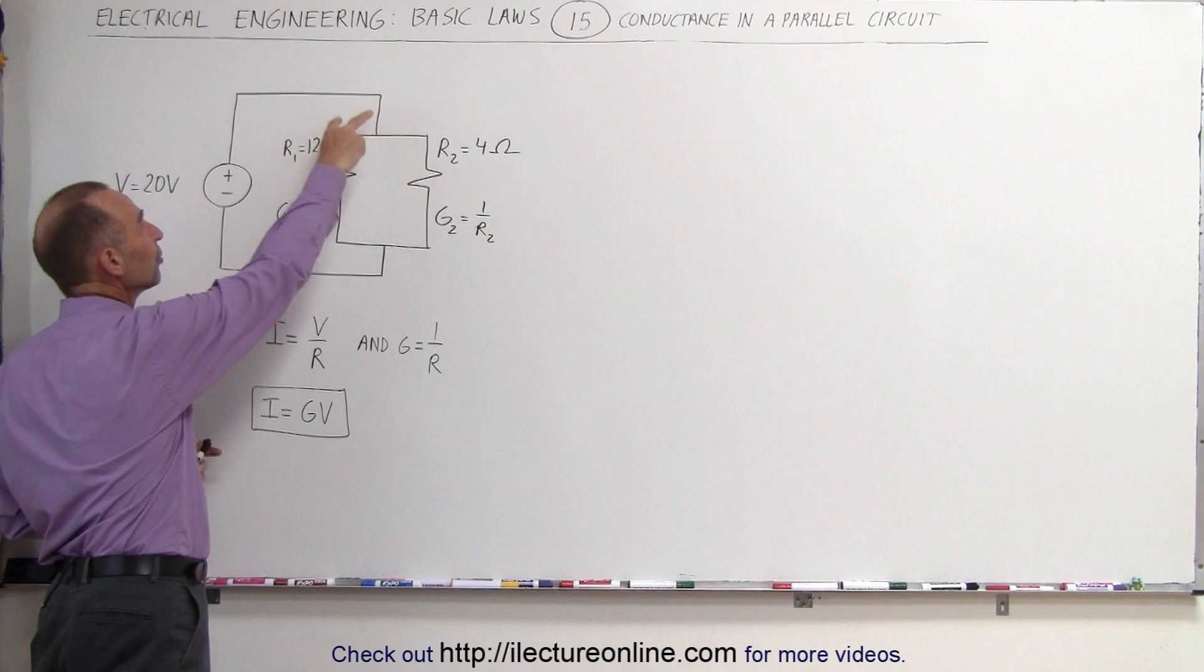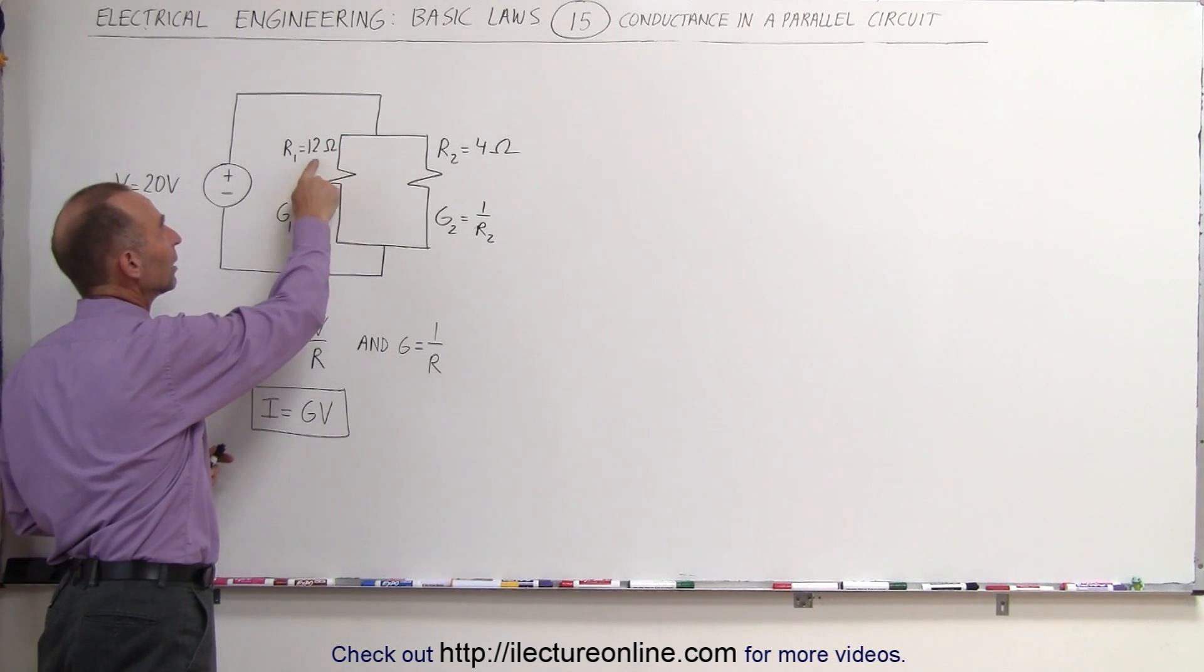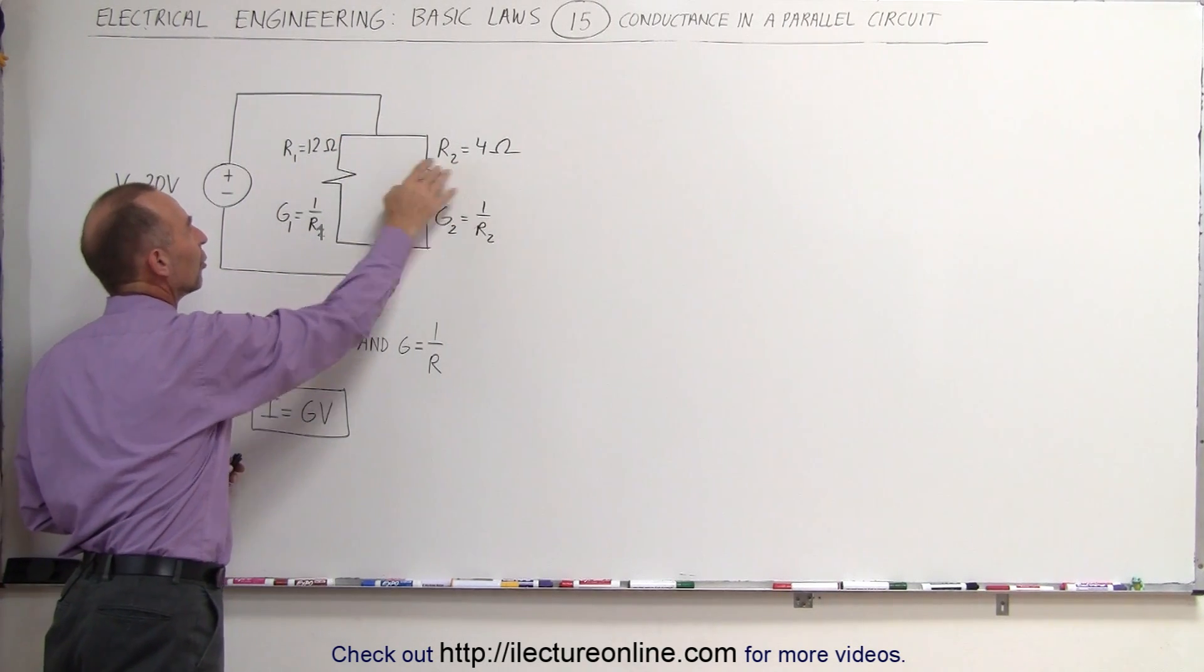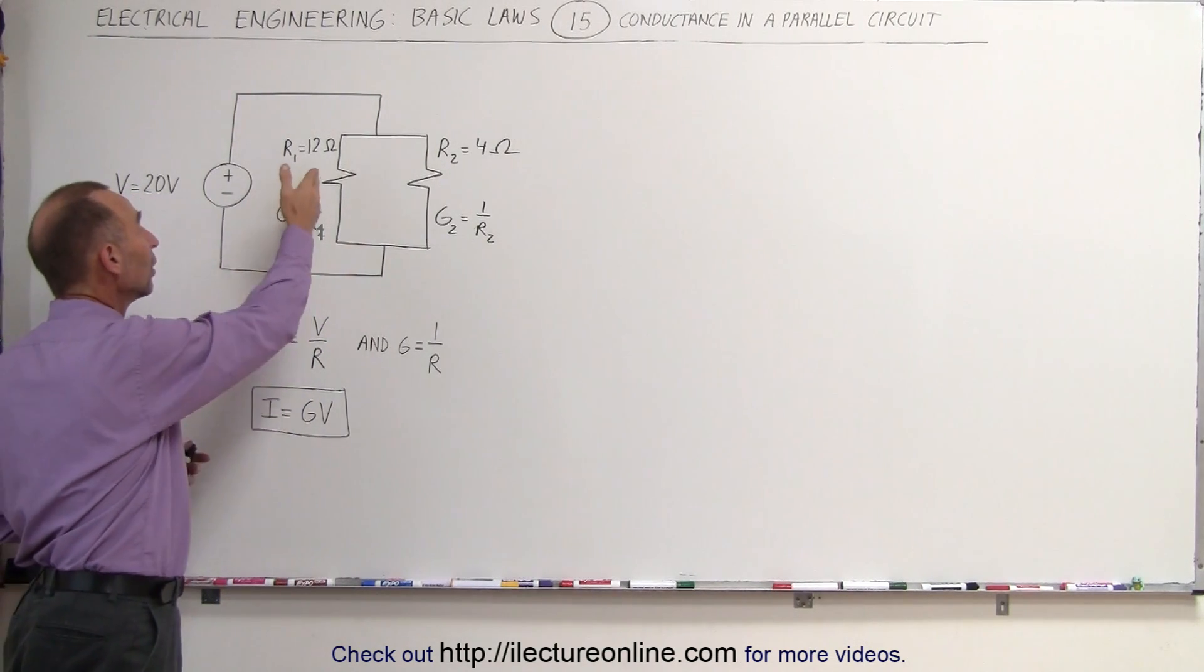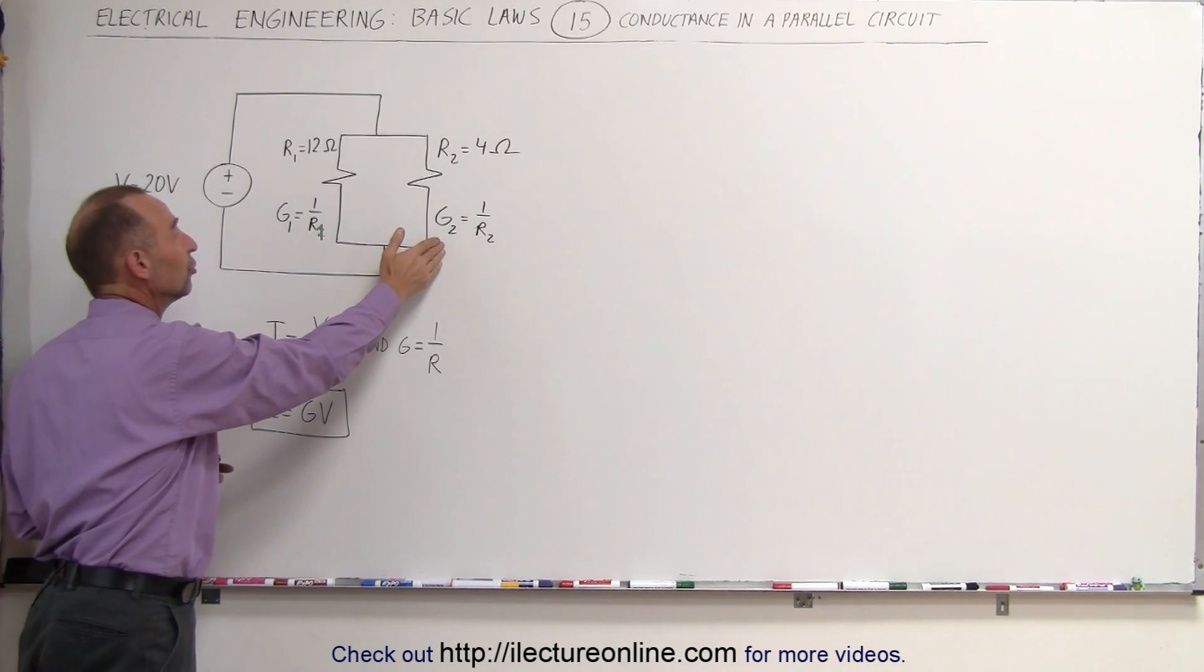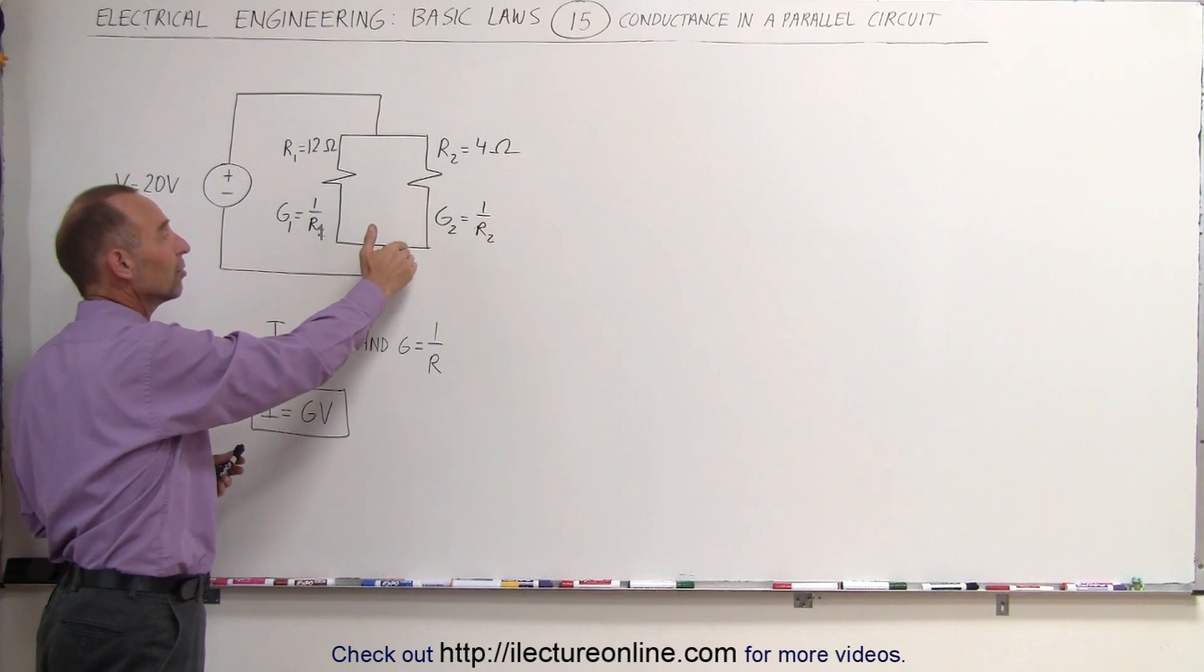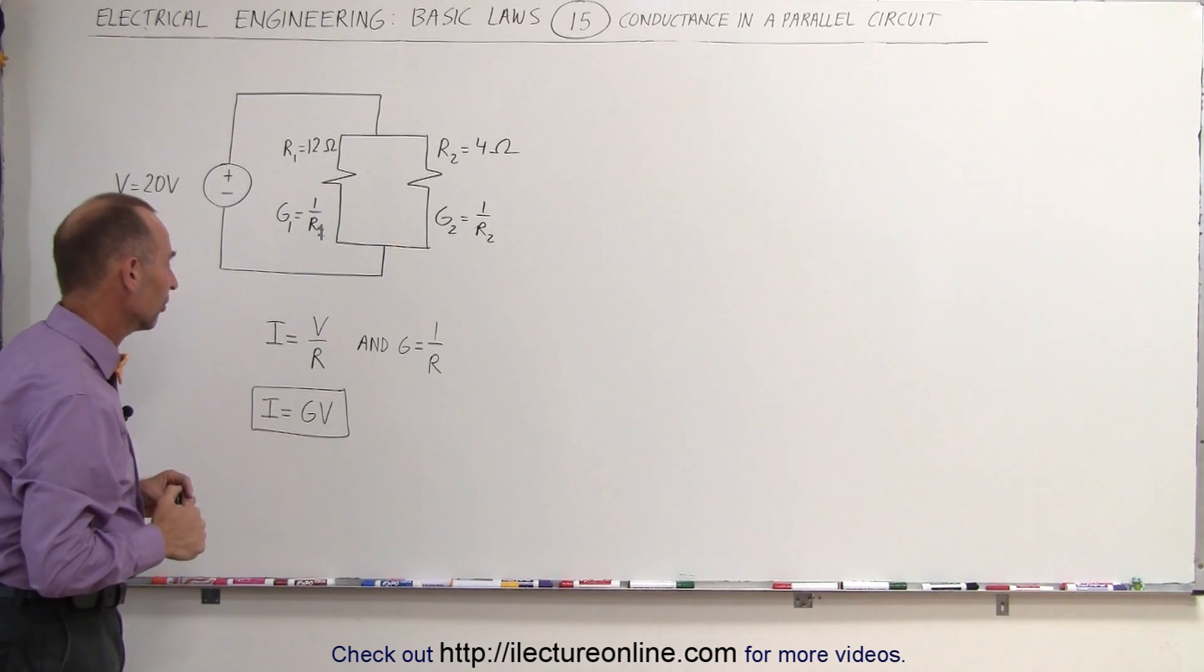So here we have two resistors in parallel. R1 equals 12 ohms, R2 equals 4 ohms. G1, which is the conductance in branch 1, is 1 over the resistance. And G2, which is the conductance in the second branch, is equal to 1 over the second resistor.